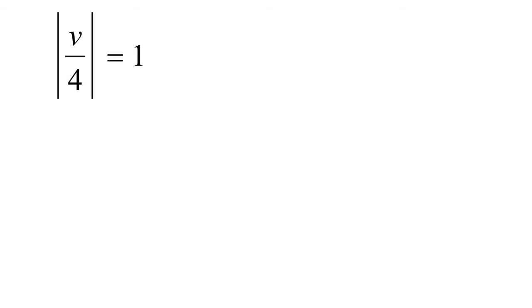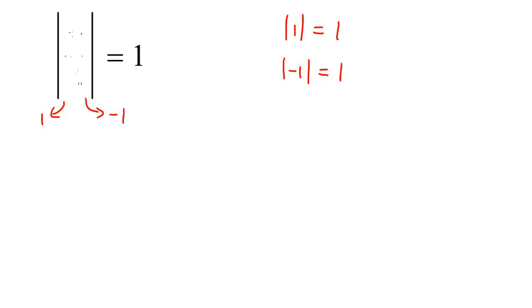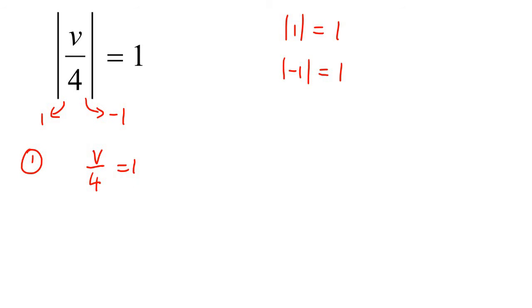Here is our next question. Is the absolute value by itself? Yes, it is. So the next step is to ignore whatever's inside the absolute value sign — literally scratch it out. Ask yourself: what number could you put inside this absolute value sign so that the answer is 1? If you put 1, that gives you 1. If you put minus 1, that also gives you 1. So we can say v over 4 is allowed to equal 1, or v over 4 is allowed to equal minus 1.